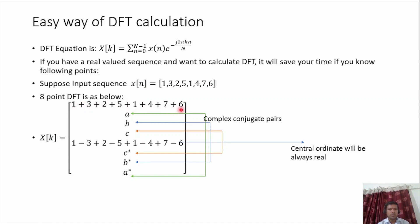Next, we'll see the central part. This is the 0, 1, 2, 3, 4th element, which will simply be the plus and minus of each element: 1 minus 3 plus 2 minus 5, as shown. This is called the central ordinate property.